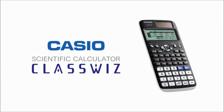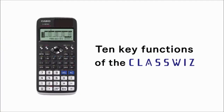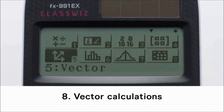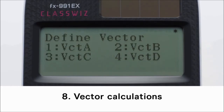The Casio ClassWiz Scientific Calculator features 10 key functions that promote efficient learning. One of these is vector calculations, which allows you to perform two-dimensional and three-dimensional vector calculations.